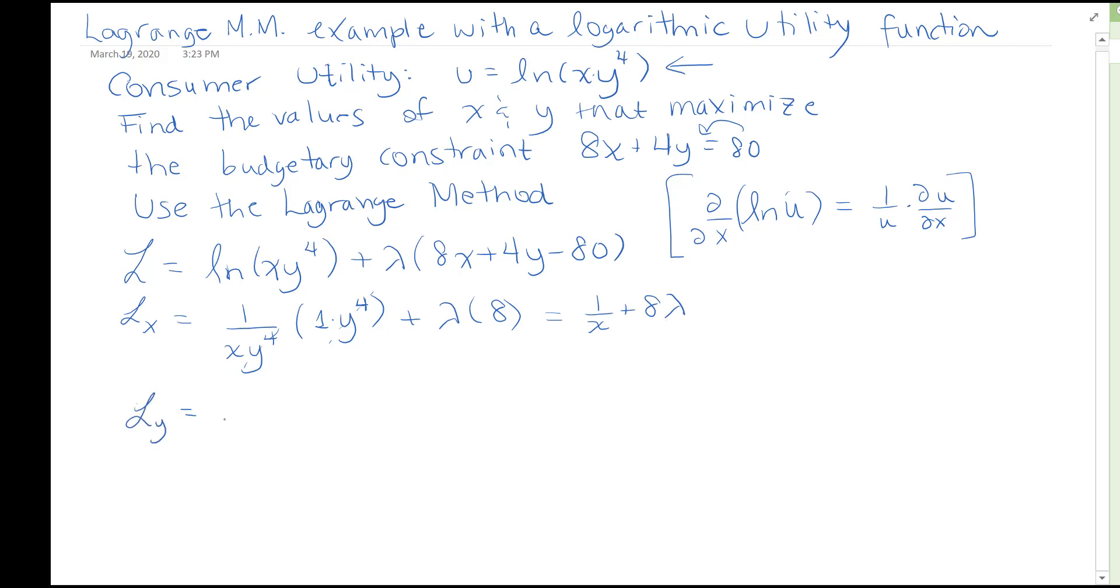Derivative with respect to y, same idea: 1 over xy first and then times by the derivative of the xy to the power 4. The derivative of that with respect to y. So the derivative with respect to y is going to be 4xy cubed plus lambda times the derivative of all of this with respect to y, so just times by 4.